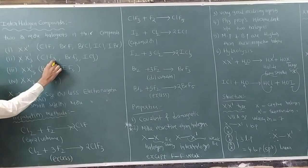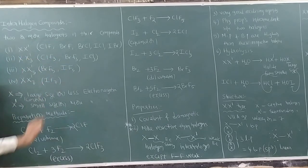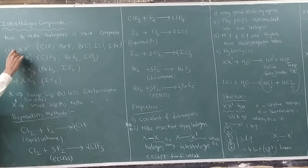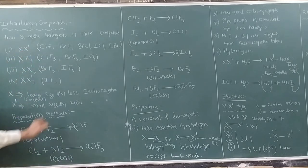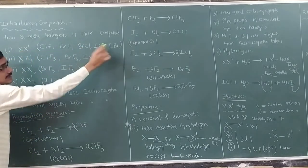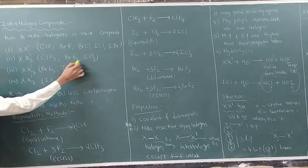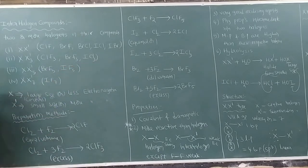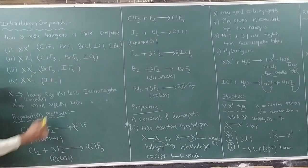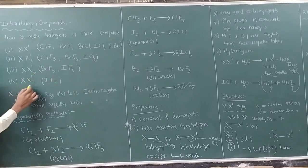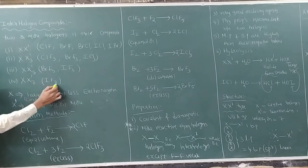The central atom has large atomic size and the surrounding atom has small atomic size — more electronegative and less electronegative respectively. Major examples: for XX'3 — ClF3, BrF3, ICl3; for XX'5 — BrF5, IF5; for XX'7 — IF7.